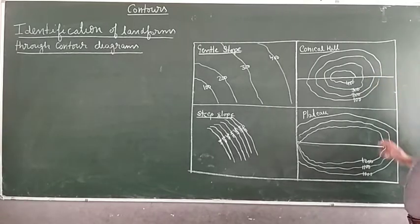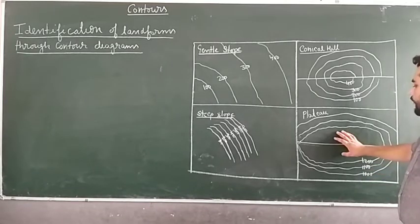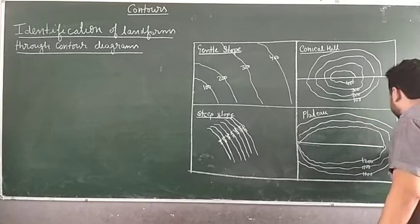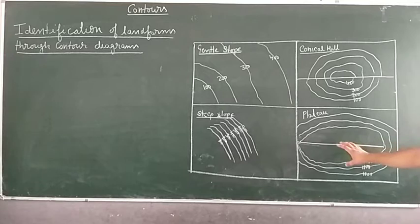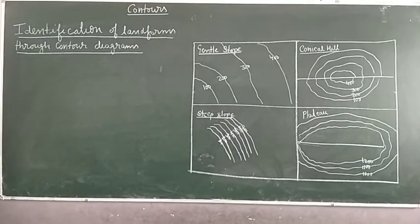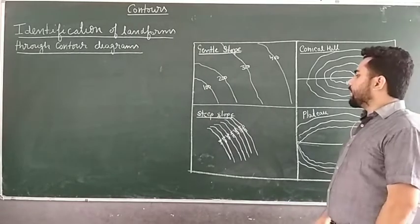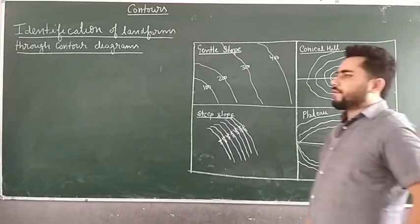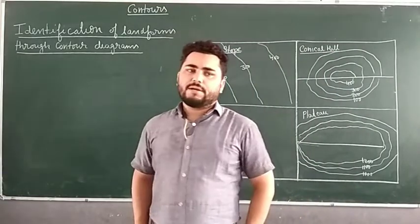If at the center there is no contour line and at the edges we are having contour lines, this type of pattern is drawn when the landform is a plateau. Basically, only these things are asked: gentle slopes, conical hill, steep slope, and plateau.